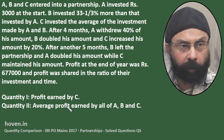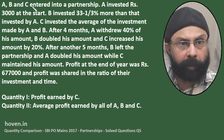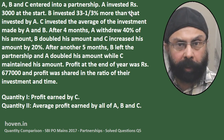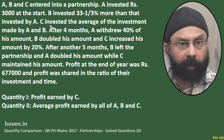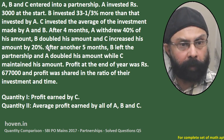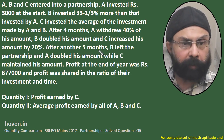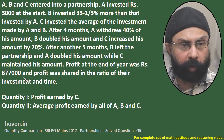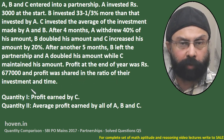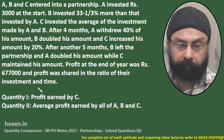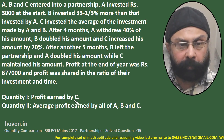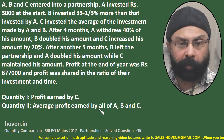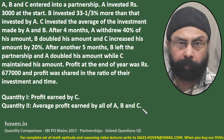Let us go through what is given to us. A, B and C entered into a partnership. A invested Rs. 3000 at the start, B invested a certain amount, and C invested a certain amount after 4 months. Then after 5 months something happened. Profit at the end of the year was given, and the profit was shared in the ratio of their investment and time. Profit earned by C and the average profit earned by all A, B and C has to be compared.